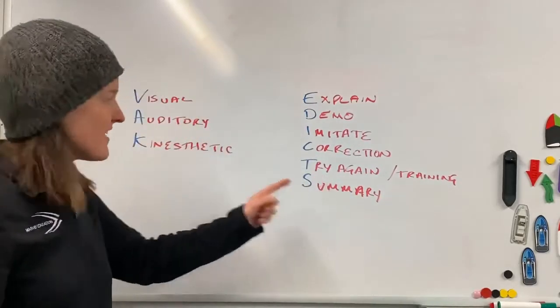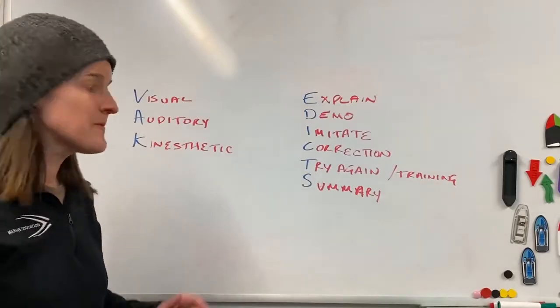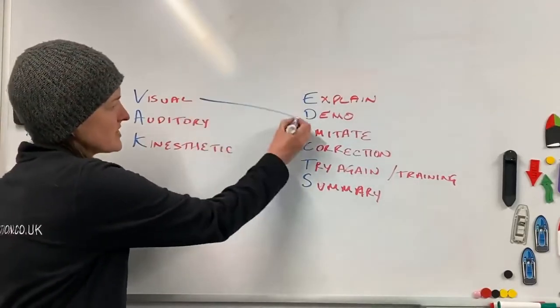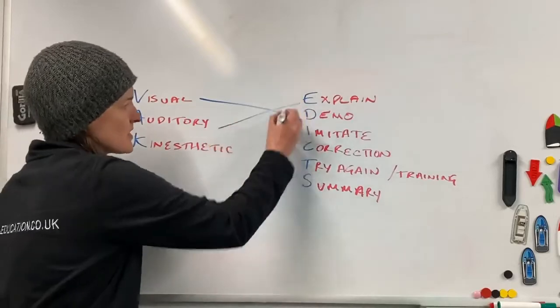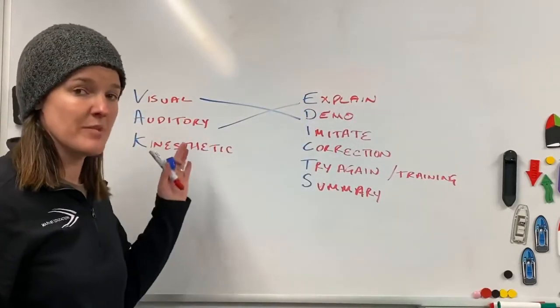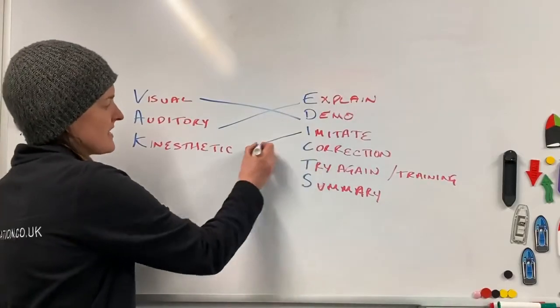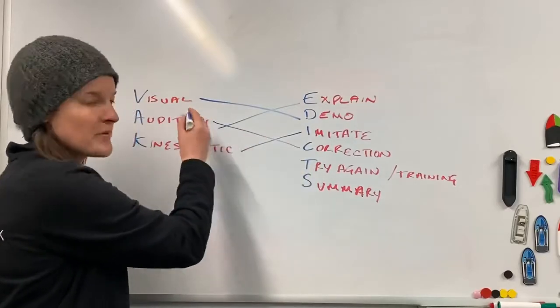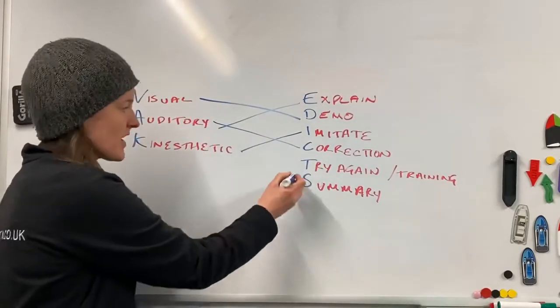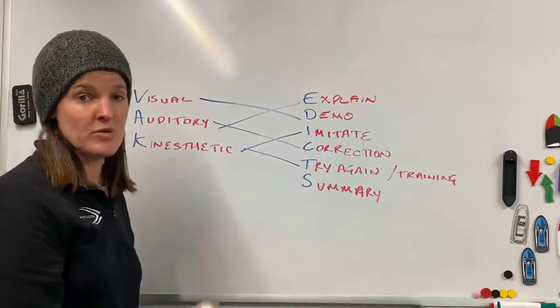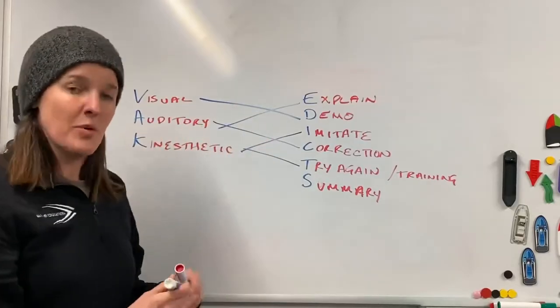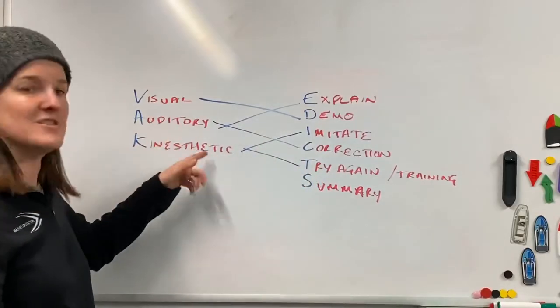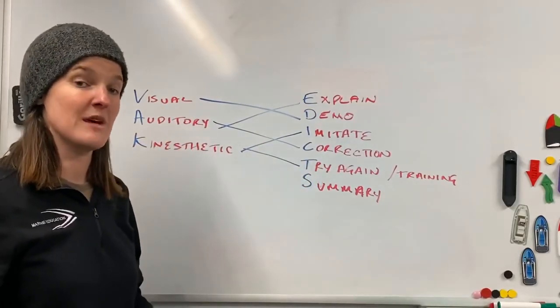If you now look at this and then you look at that, you will see that these things join up. Visual learning happens through a demonstration. Explain is often auditory, might be done through pictures as well so it might be a bit of visual too. If they imitate, it's kinesthetic because they're having a go. When you correct them, that's likely to be auditory but could also be visual. When they have another go, we're going back to kinesthetic, and the summary can be auditory or visual. You're looking at that as an amalgamation. The point of EDICTS is that it's not just made up, there is a purpose to it, and that purpose is to fulfill all learning styles for our students to make sure that they get the best out of the session.